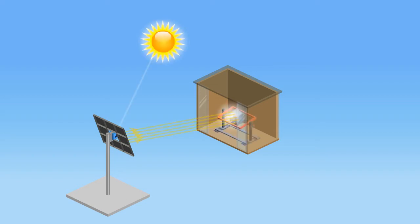A heliostat is a simple computer-controlled mirror which reflects the sun onto a target. As the sun moves across the sky, the heliostat adjusts to keep the target heated.